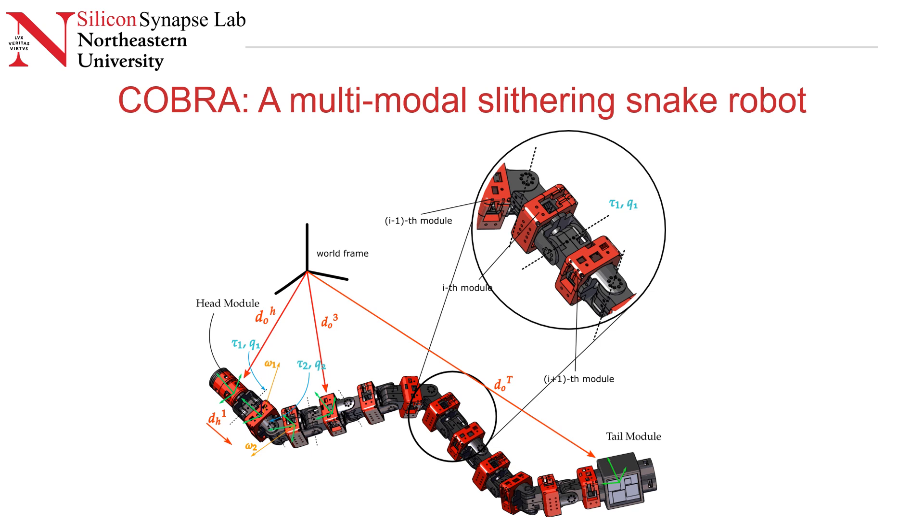This is Cobra. It's a multimodal slithering snake robot. It consists of 11 joints and 12 links. The middle 10 links are all identical, each with their own power supply and servo. The 11 joints are arranged such that the alternating joints are at 90 degrees to each other. Each joint is actuated by a single dynamic servo and this is daisy-chained through the robot, controlled centrally from a Raspberry Pi placed in the head.